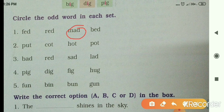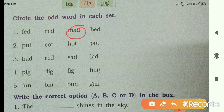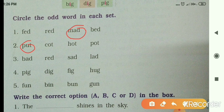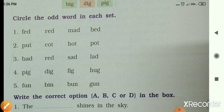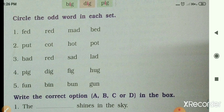Now for number 2, let's read: put, P-U-T. Then C-O-T — cot, hot, pot. So among put, cot, hot, pot — the odd word is put. Practice the remaining sets on your own, and after that I will give you all the answers. But first of all, you try it.